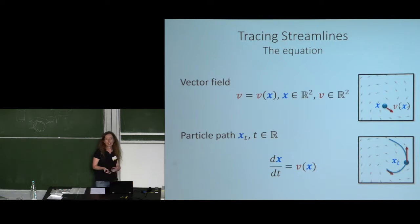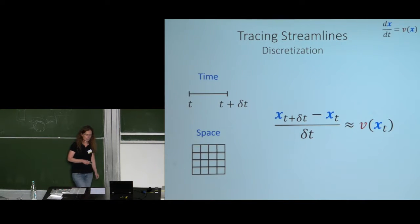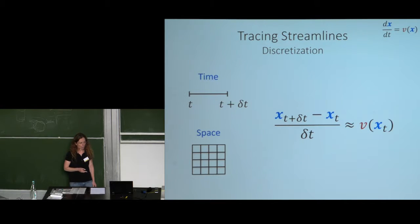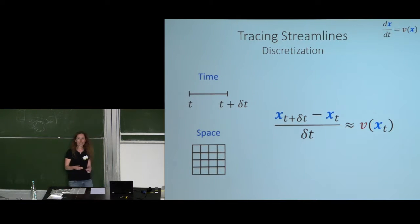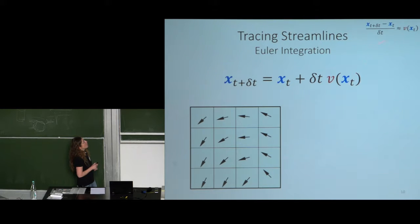Everything is continuous: t, v, and x. To do computation, I need to discretize. I discretize time into equal spacings of delta t, and space as a uniform grid. With this simple discretization, I can use forward differences to approximate the derivative as (x(t + delta_t) - x(t)) / delta_t. Rearranging, the next position is x(t + delta_t) = x(t) + delta_t * v(x(t)). This is an iterative scheme: knowing the current point, move in the direction of the vector field for a length delta t.